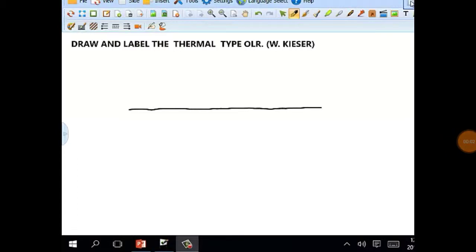This is the thermal type overload relay and it has a bimetal strip. The bimetal strip is made of two different types of material. Now under normal conditions, when current does not exceed the rated value, the bimetal strip is designed for a certain amount of current.